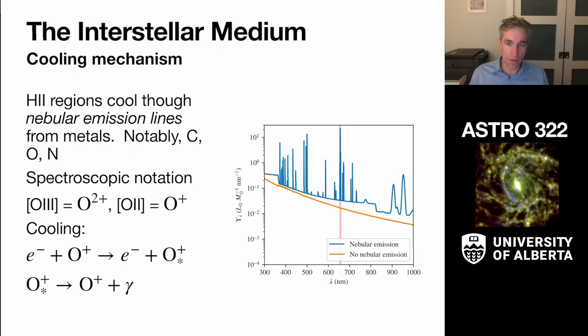If a 30 electron volt photon comes in and ionizes a photon, there is going to be 16.6 electron volts of kinetic energy carried by the electron after it gets ripped off the hydrogen atom.